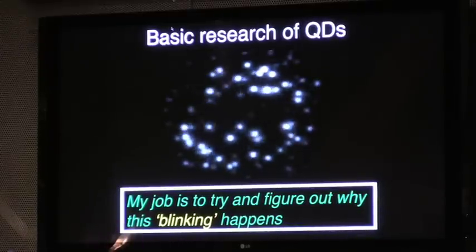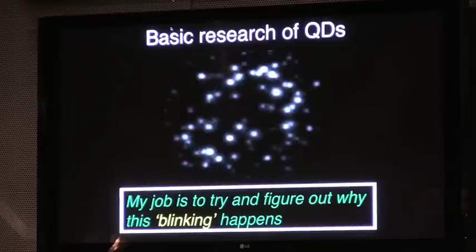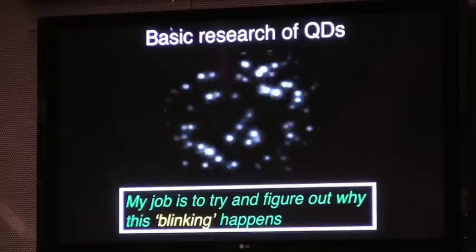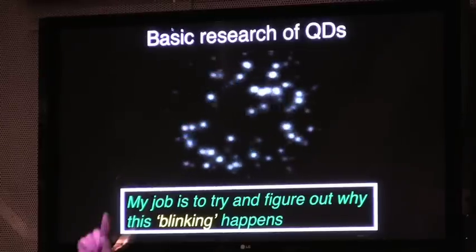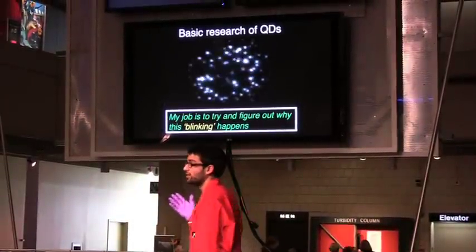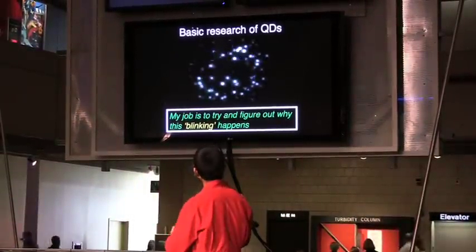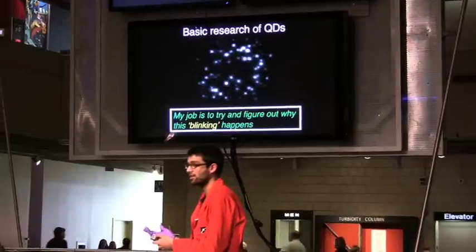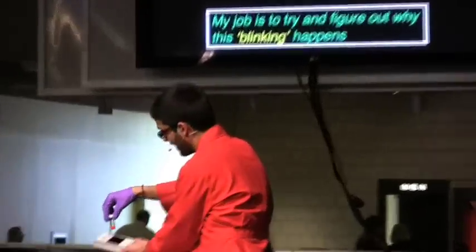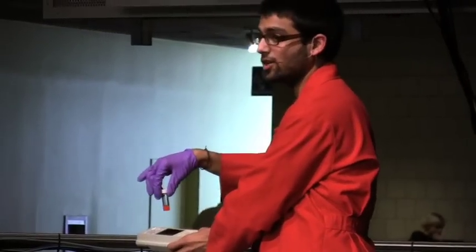All these blinking dots right here are all individual quantum dots — single crystals. When I look at each of them one by one, I see that they're going on and off, kind of like turning a light switch on and off. My job is to try to understand why this blinking occurs when looking at a single nanocrystal, but if I take this whole vial and hold it up to the light, it always stays on. It's a very difficult problem that people really don't have an understanding of, but it holds a lot of power and it's really worth knowing the answer to.